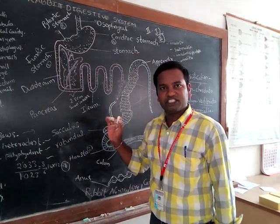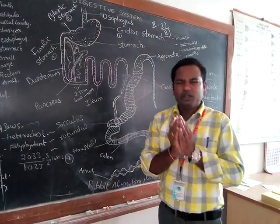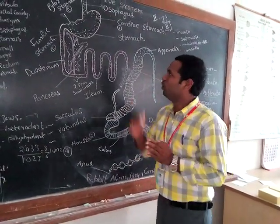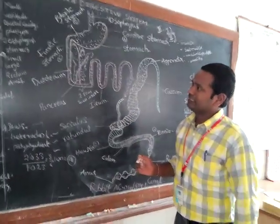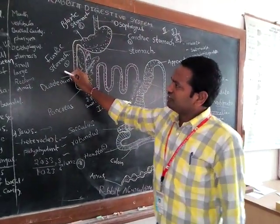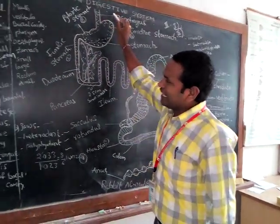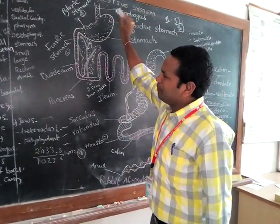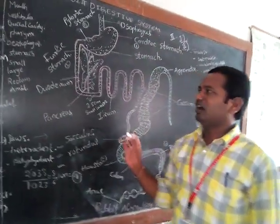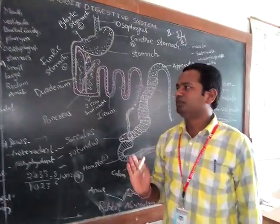Mouth is the first part of the alimentary canal. The mouth mainly has two lips: upper lip and lower lip. Next is the vestibule — it is the small cavity present between the lips, cheeks, and gums of the teeth, called the vestibule.